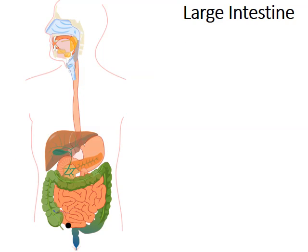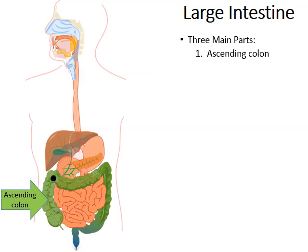After the ileum, we pass into the large intestine — shown in green in the picture. It has three main parts. The first is the ascending colon, where the chyme moves upward on the right side of the body. There's also a small appendage at the bottom of the ascending colon called the appendix. Once thought to be vestigial with no purpose, we now believe the appendix has a reduced but real role — it appears important in storing some of the beneficial bacteria that survive within our large intestines.